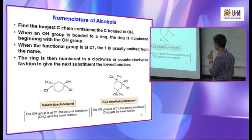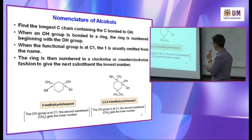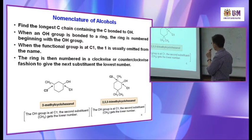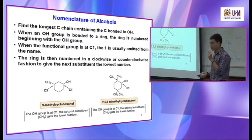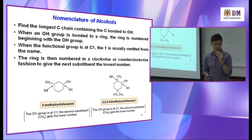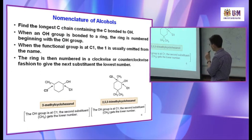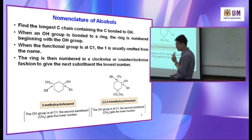The ring is numbered clockwise or counterclockwise to give the next substituent the lowest number. In this case it's counterclockwise. You have the OH always at position one, and counting gives positions two and five for the methyl substituents, versus three and six going the other way — so two and five is preferred. This compound is 2,5,5-trimethylcyclohexanol.